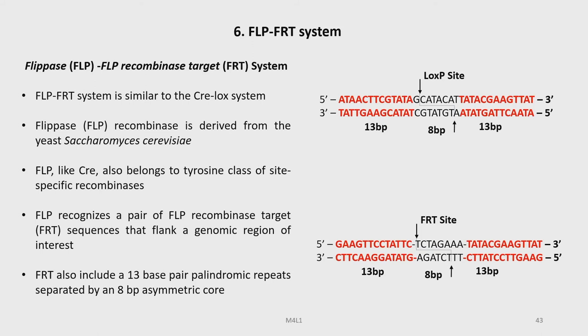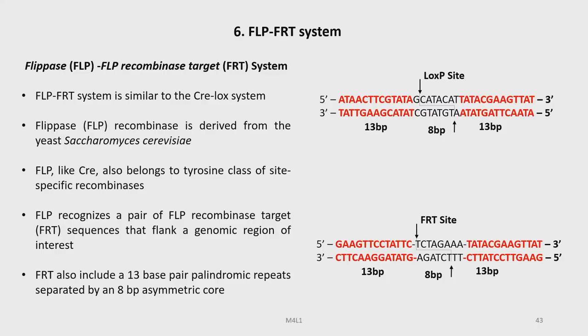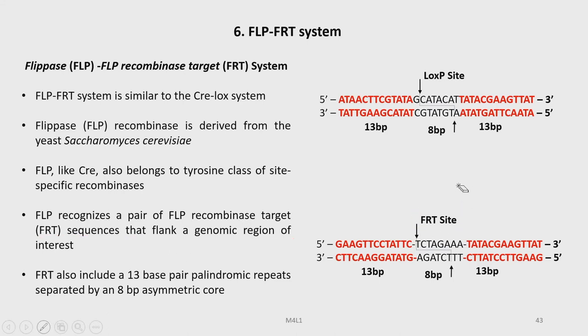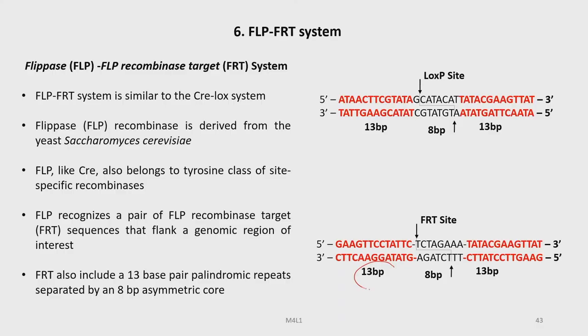Let us now discuss the FLP-FRT system, also called the FLP recombinase target system. The FLP-FRT system is similar to the Cre-LoxP system. The FLP recombinase is derived from the yeast Saccharomyces cerevisiae. Like Cre recombinase, FLP also belongs to the tyrosine class of site-specific recombinases. FLP recognizes a pair of FLP recombinase target sequences called FRT sequences, which flank a genomic region of interest, similar to the LoxP site in the case of Cre. FLP also includes a 13 base pair palindromic sequence separated by an 8 base pair asymmetric spacer.